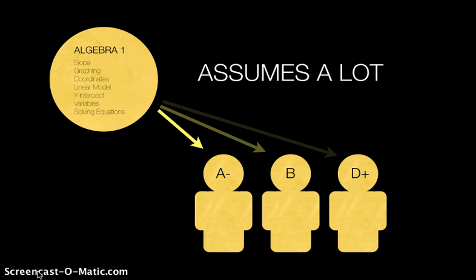There's a big problem today in the way we organize learning in our schools. We might take a course called Algebra 1, which covers material from slope to y-intercepts to solving equations, and then we assign a grade to the students who take those courses.